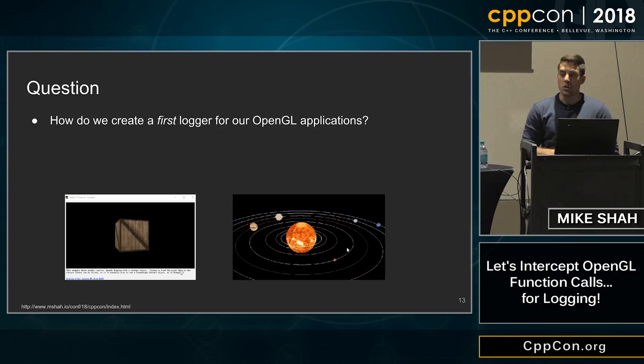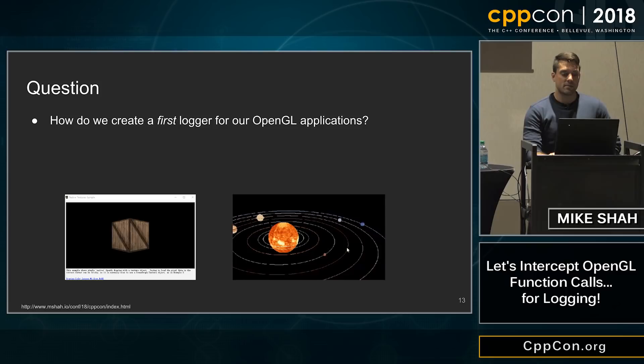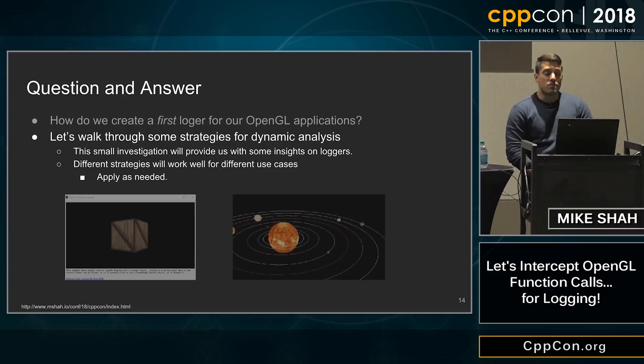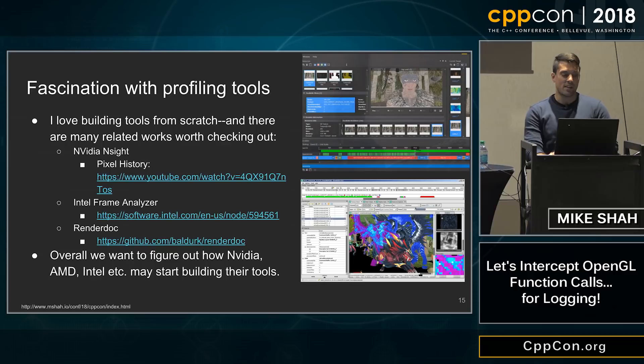So we know a little bit about OpenGL. The question is, how do we create our first logger for OpenGL applications? I want to walk through my evolution of building these tools — some different strategies for dynamic analysis. Apply as needed; use the right tool for the right job. This starts with a little bit of fascination looking at profiling tools available from companies like NVIDIA, AMD, and Intel.